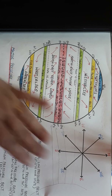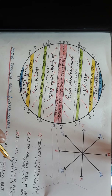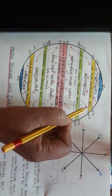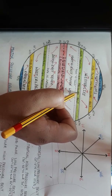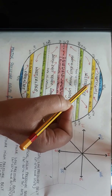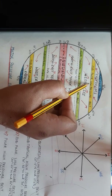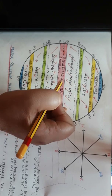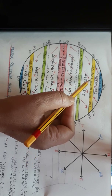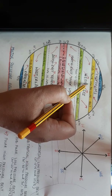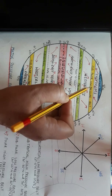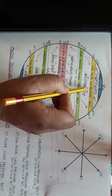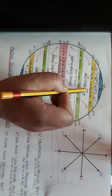Number three — we have the subpolar low pressure belt. This belt is located from 60 to 65 degrees north and 60 to 65 degrees south. Now, if we relate temperature with pressure, this area is 60 degrees away from the equator near the polar regions, so temperature is comparatively low. Based on that, this area should experience high pressure — but this is not the exact situation.